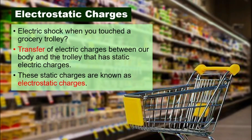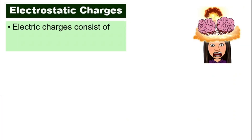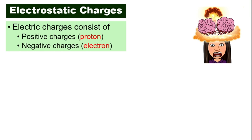These static electric charges are known as electrostatic charges. First of all, we have to know that electric charges have two different types. They consist of positive charges and negative charges. Positive charges are known as protons, whereas negative charges are known as electrons.